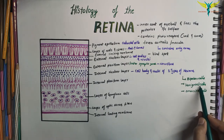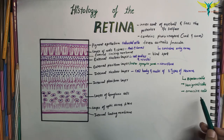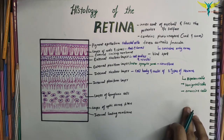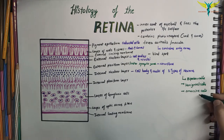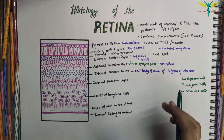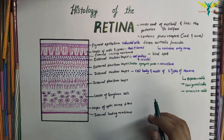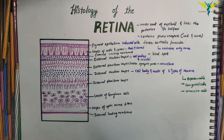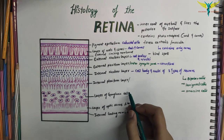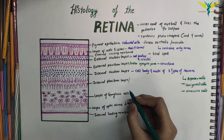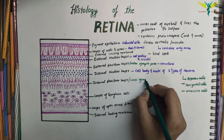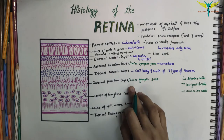Amacrine cells also lie horizontally in the retina, and their processes enter the inner plexiform layer where they synapse with the axons of the bipolar cells and with the dendrites of the ganglion cells.